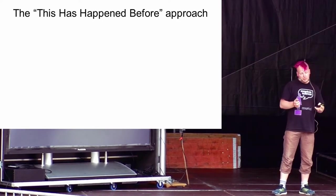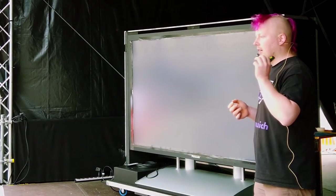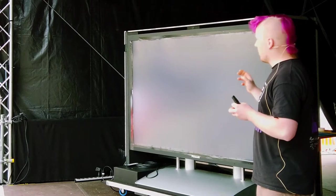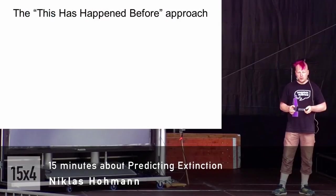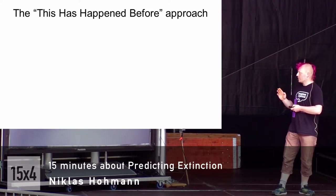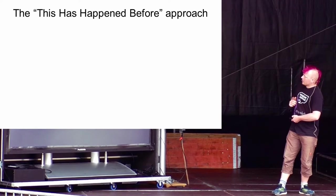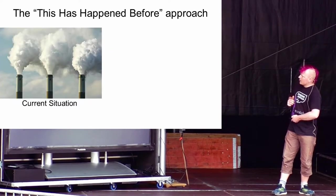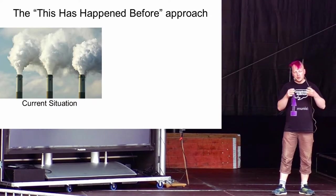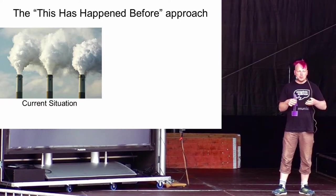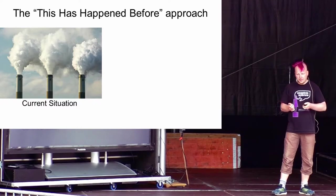There are different approaches to trying to assign extinction risk to a species, and one approach is what I call the 'this has happened before' approach. The idea is really simple: you just look at what is happening right now. We are putting a lot of CO2 into the atmosphere, which leads to global warming and ocean acidification.